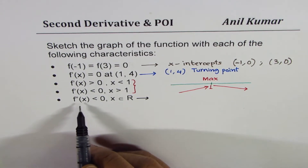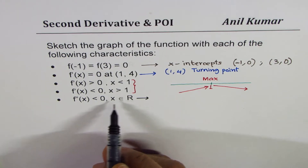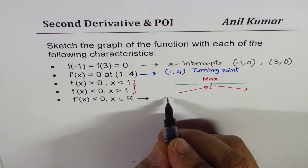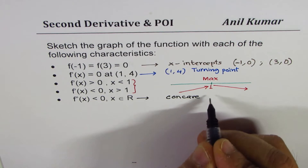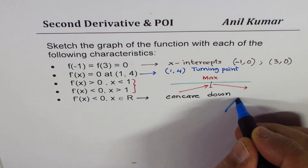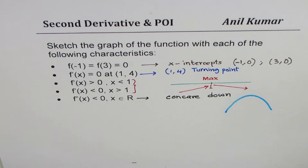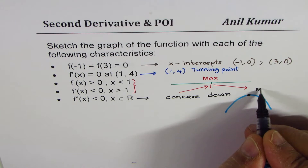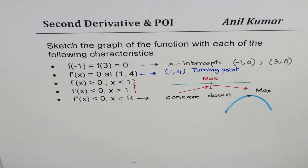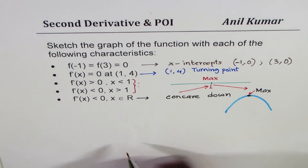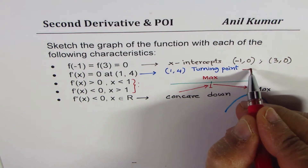The last condition is that the second derivative is less than 0 for all real numbers. When the second derivative is less than 0 for all real numbers, that means the function is concave down everywhere. Concave down means the function looks like an inverted curve, so at any turning point we are looking for a maximum — which confirms what we found from the first derivative.